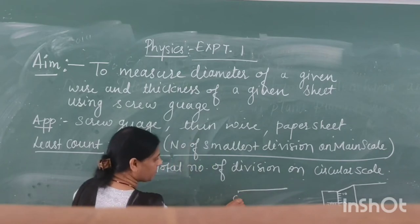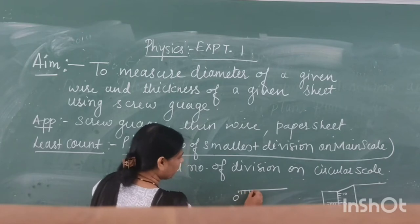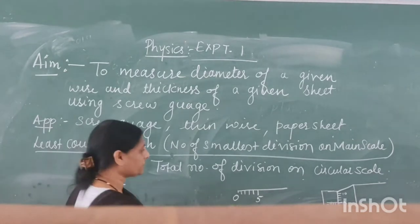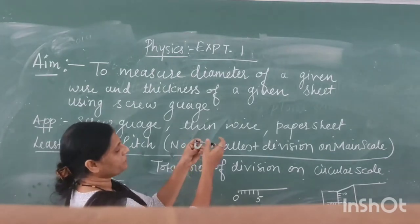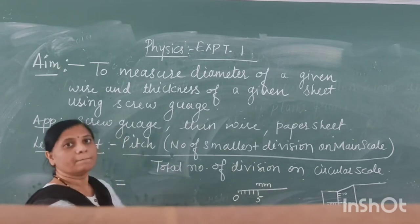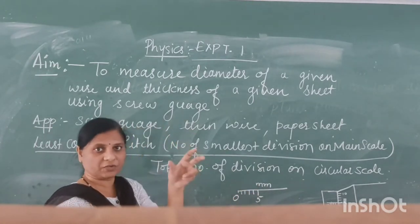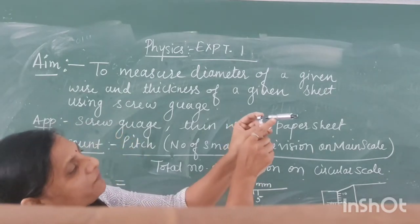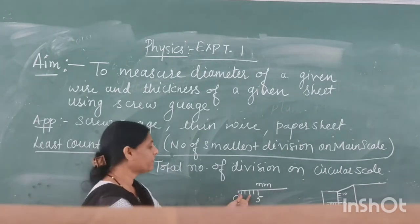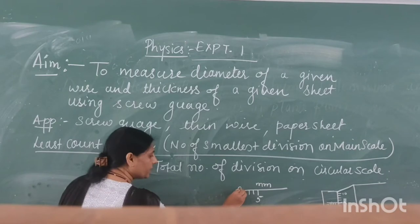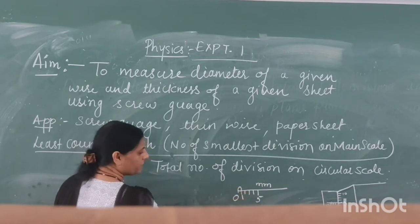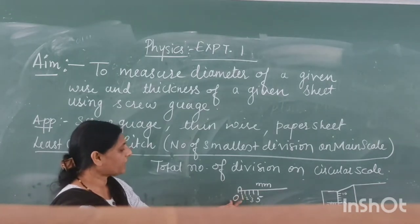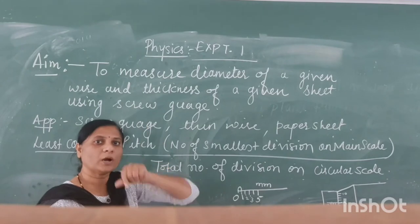Our main scale starts from 0, 1, 2, 3, 4, 5. The main scale is given in millimeters. To find the smallest division on the main scale: between 0 and 5 there are 4 lines, so the difference between the starting two lines is 1 millimeter. So the smallest division on the main scale is 1 millimeter, which we can write as 0.1 centimeter.